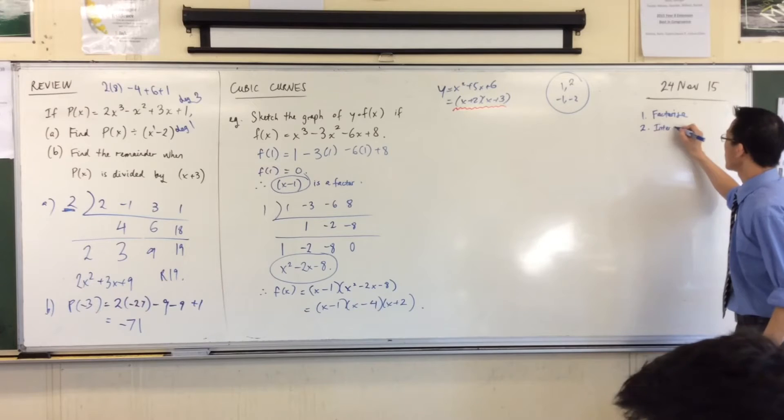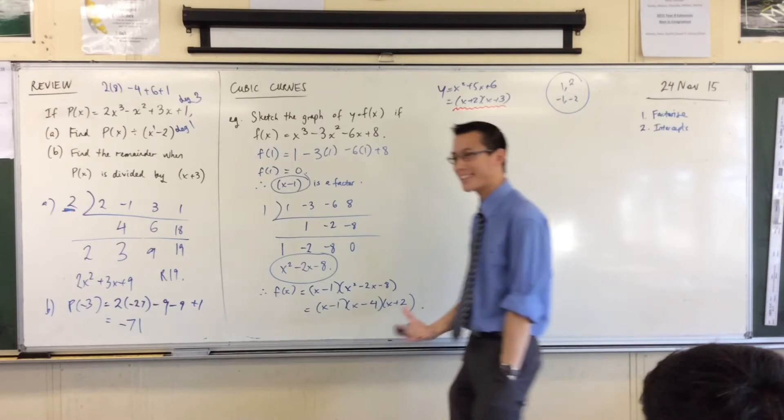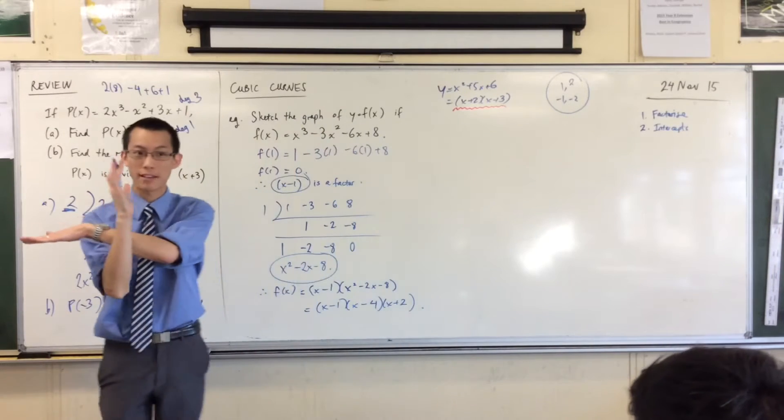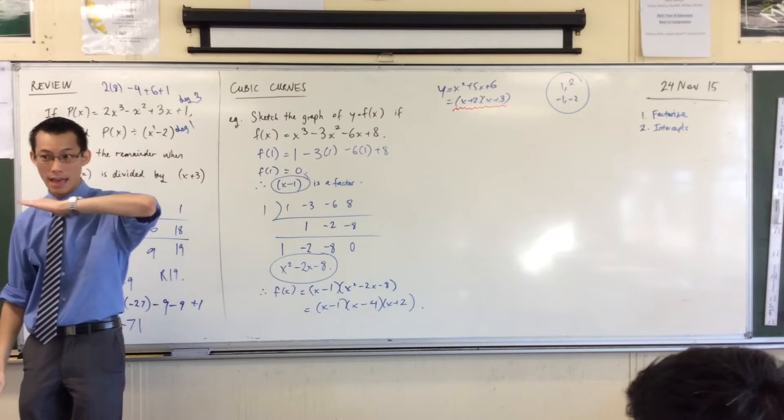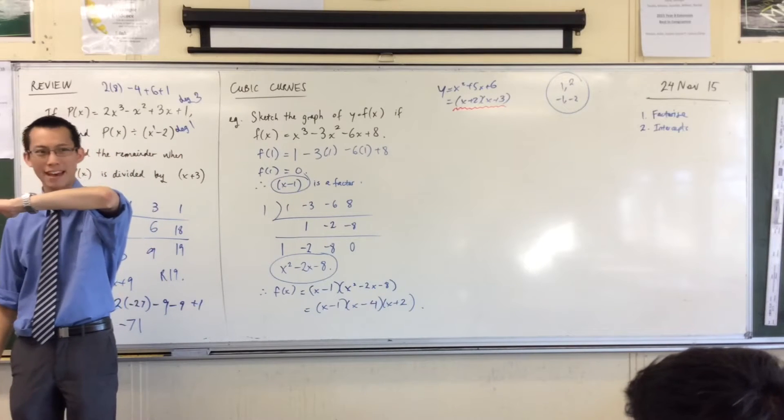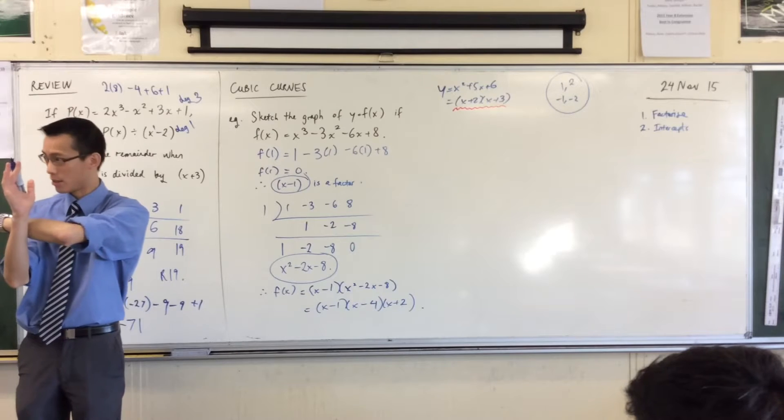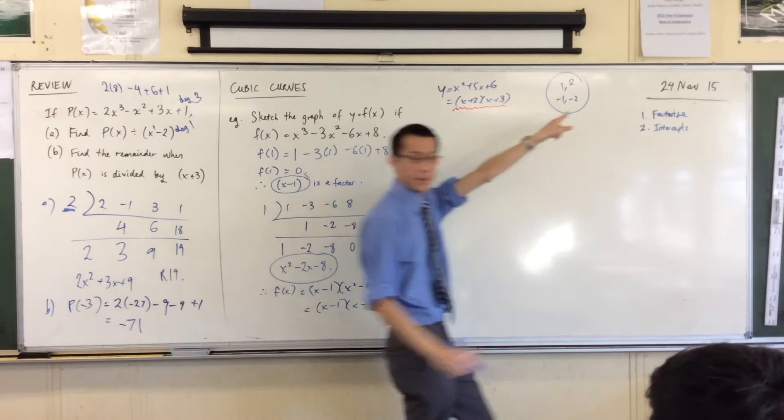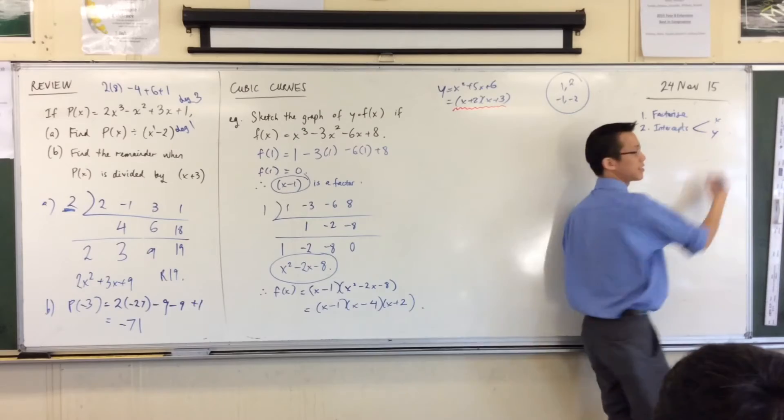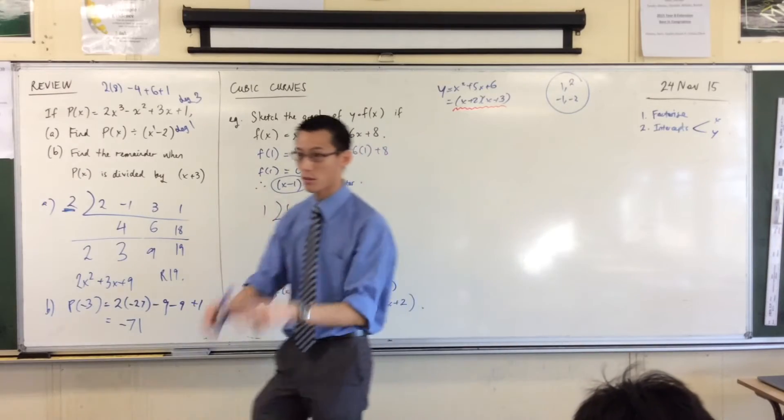Now don't forget there are two kinds of intercepts because there are two axes on our Cartesian plane. So there's the x-axis, which is the roots that we're talking about, and then there's the y-axis. So we've got a y-intercept as well. I'm going to say I'm looking for x-intercepts and y-intercepts.